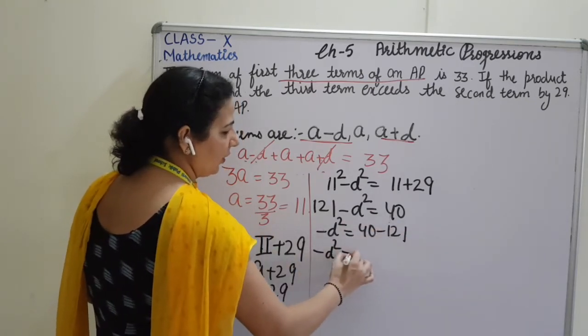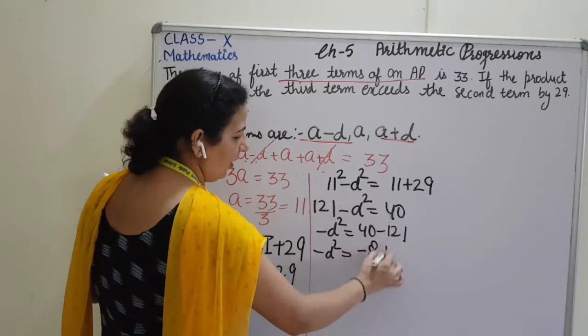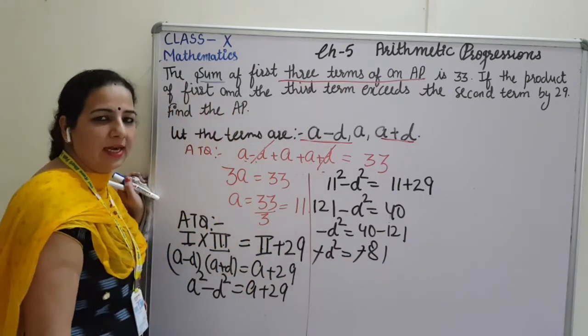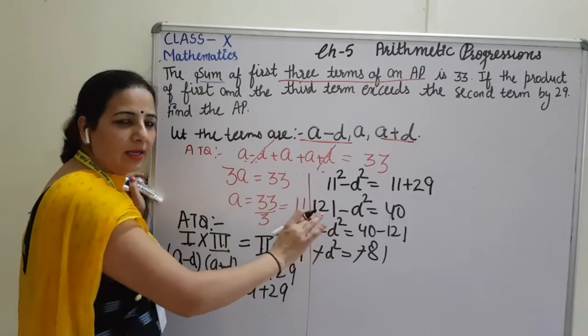So, minus D square is equals to 40 minus 121. Minus D square is equals to minus 81. Minus minus cancel here.